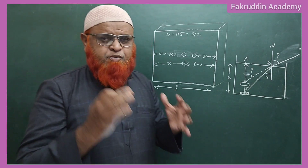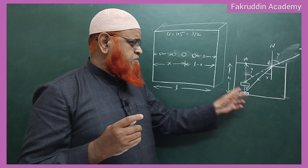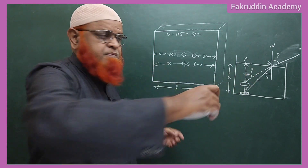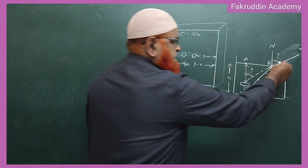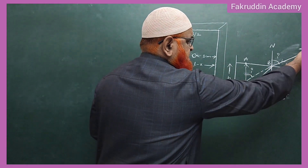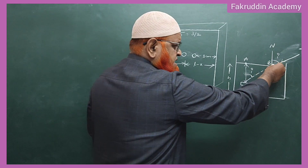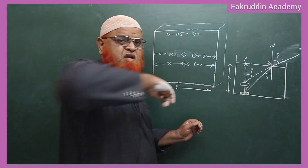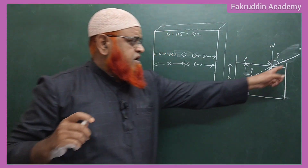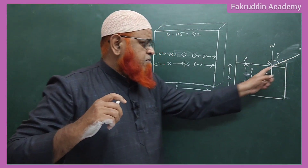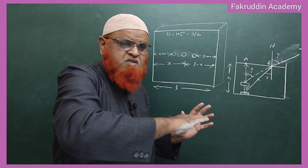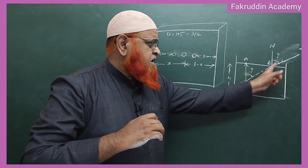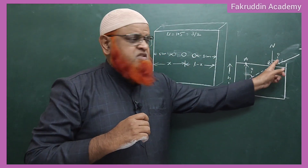So let me prove what is the concept behind this. The coin appears to be a little bit raised. When a man sees it, the light ray bends towards the normal. When a light ray is coming from a rarer to a denser medium, it bends towards the normal. This is the angle of incidence and this is the angle of refraction.